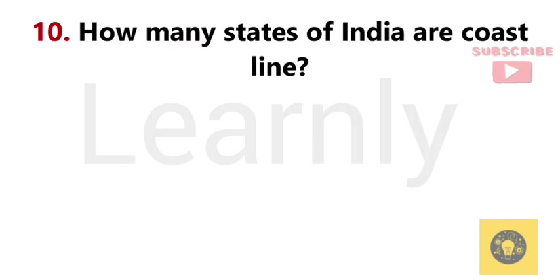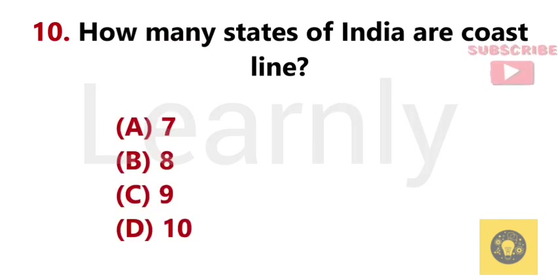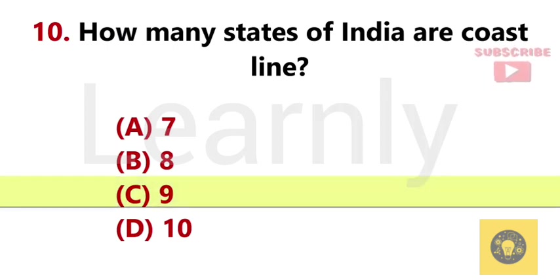How many states of India have a coastline? Answer C. 9 states.